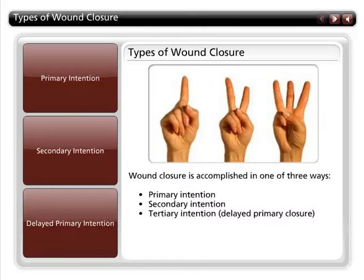Wound closure is accomplished one of three ways: by primary intention, secondary intention, or tertiary intention, also known as delayed primary closure. Let's explore these various types of wound healing by clicking on the tabs.